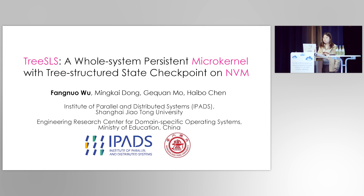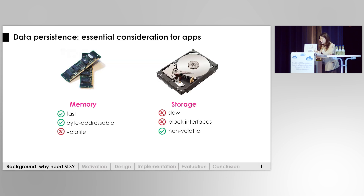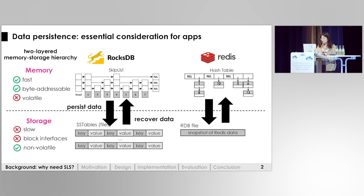This work tries to explore new possibilities for data persistence with modern devices. Data persistence is an essential consideration for applications. However, for a long time, the available storage devices failed to provide performance and persistence at the same time. Given this limitation, modern applications are built on the two-layered memory and storage hierarchy. They put runtime data in memory for efficient data access and serialize data to disk for persistence. If the system crashes, they must also rebuild the in-memory data structure from disk.